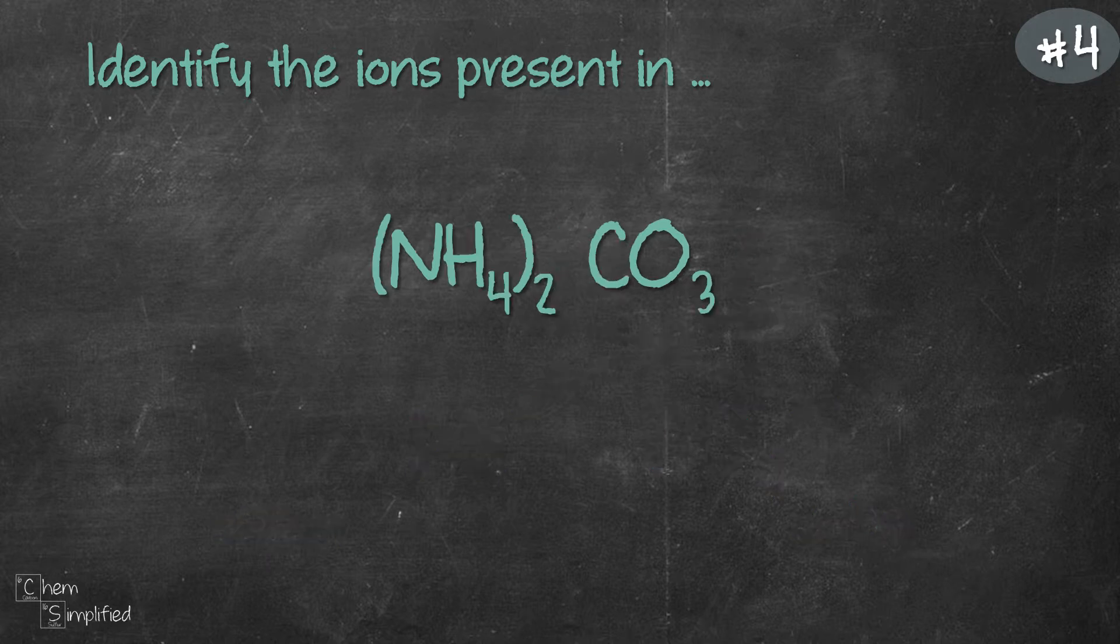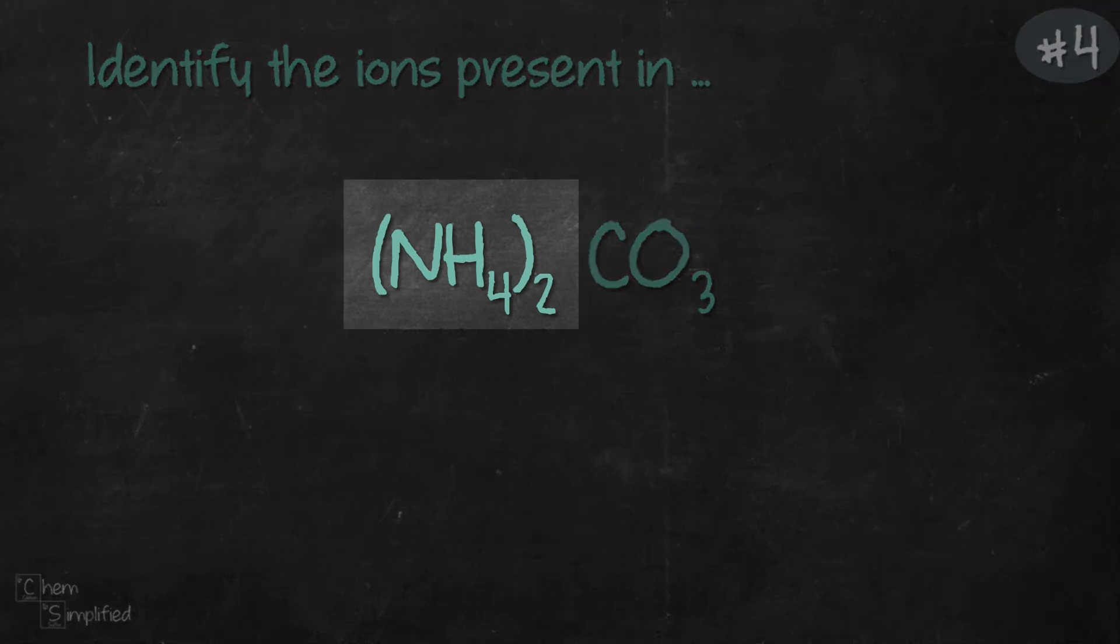So let's try another example. What do you think are the ions that are present in (NH4)2CO3? From this example, it looks like we have two polyatomic ions that are present. Notice that NH4 is in a bracket with that 2 outside.